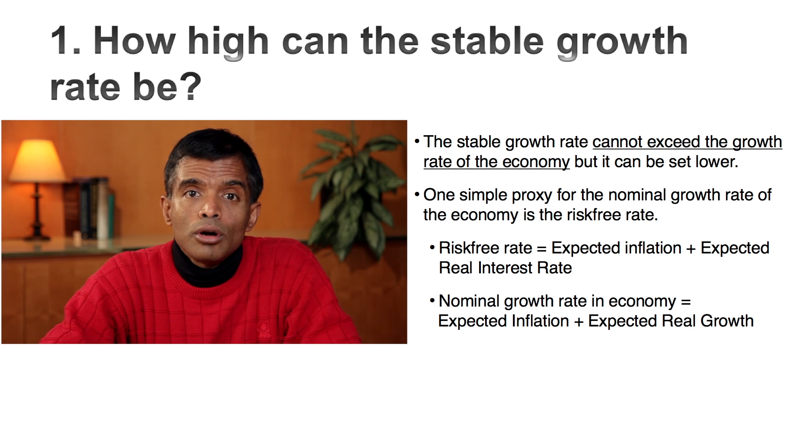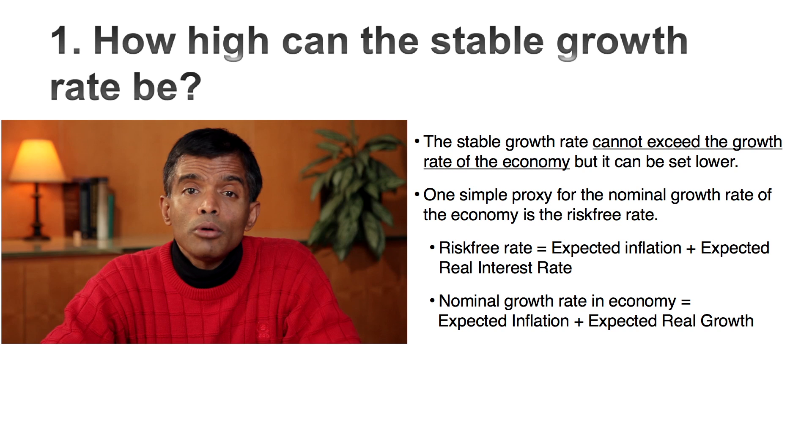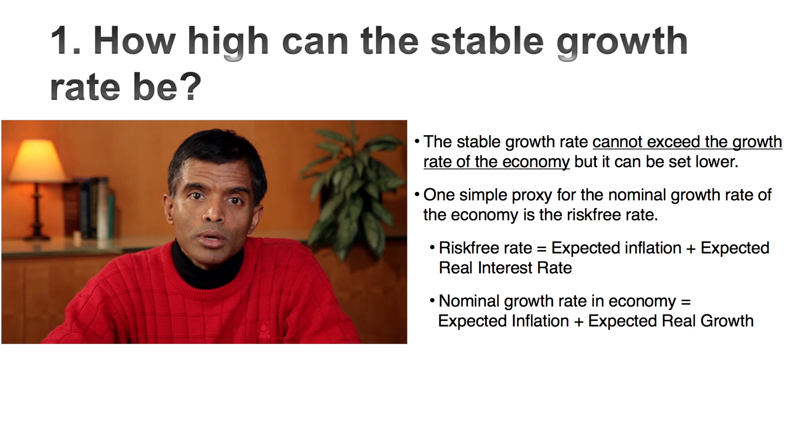First check: make sure that you don't exceed the cap. In a going concern terminal valuation, you assume your cash flows will grow at a constant rate forever. That growth rate cannot exceed the growth rate of the economy. A proxy you can use is the risk-free rate. Think about what goes into the risk-free rate: expected inflation and an expected real interest rate — the same components as the nominal growth rate of the economy. The risk-free rate is an excellent proxy for the nominal growth rate of the economy, and even if you disagree, use it as your cap. If you think the risk-free rate is too low, your cost of capital is too low, so I'll force you to keep your growth rate low — it keeps your valuations in sync. That's the first rule.